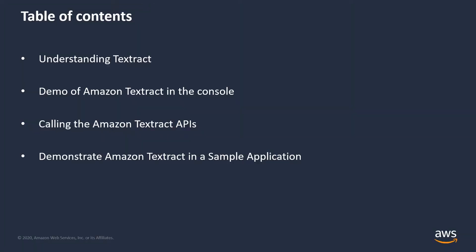In this video, we're going to cover a few things. First, we'll talk about what Amazon Textract is and how it can be useful in your applications. Next, we'll have a look at Amazon Textract in the console and see some of its features in action. We'll then look at how to call Amazon Textract in your custom .NET Core web application. Finally, we'll walk through a demonstration of Amazon Textract in my sample application.